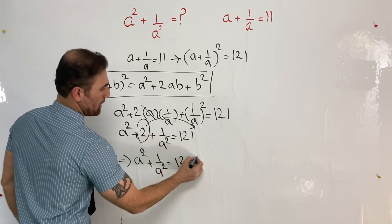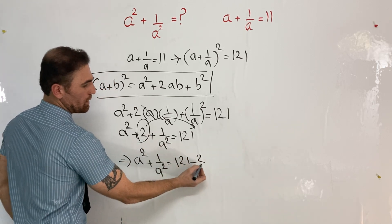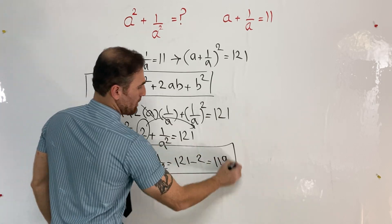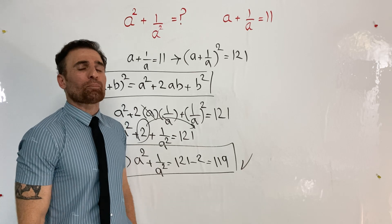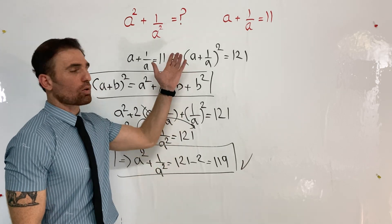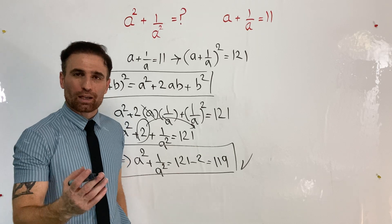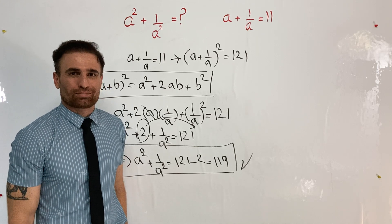121 minus 2 equals 119, and this is the correct answer. Remember, if you use a different way to solve this question, please let me know. It always makes me happy to see how creative you guys can be. Have fun!